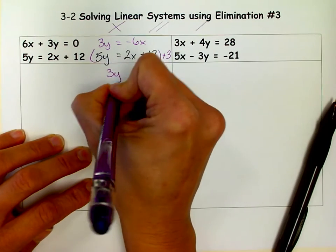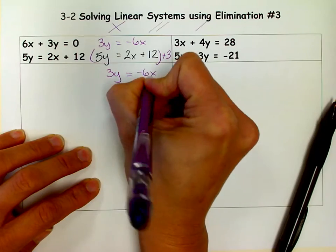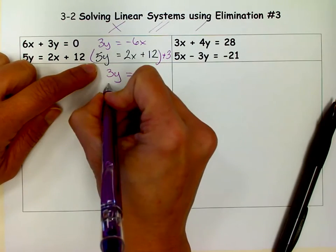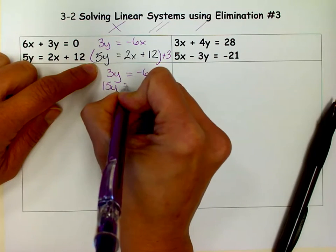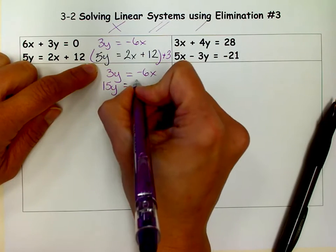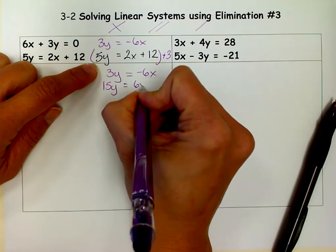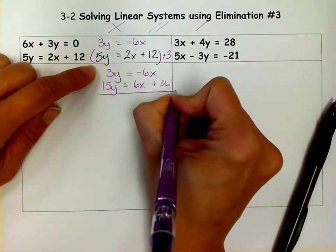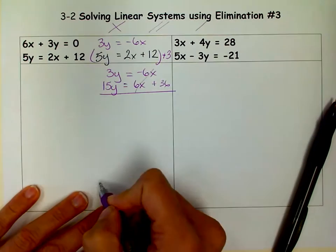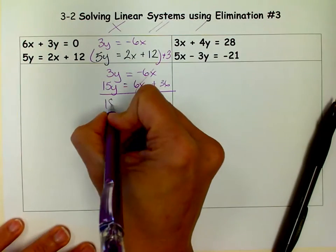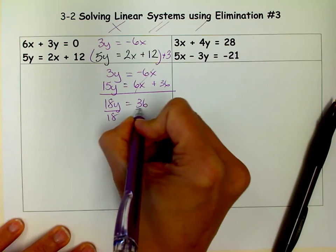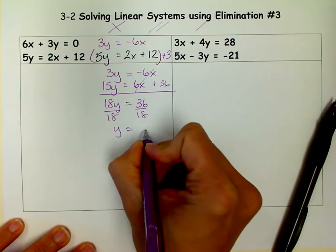So my first equation again that I had changed was 3Y equals negative 6X. And now I'm going to change this one. So 5 times 3 is 15Y. 3 times 2X is 6X. And 3 times 12 is 36. And now I'm going to add to eliminate my X's. So that's 18Y equals 36. And when I divide both sides by 18 I get Y equals 2.